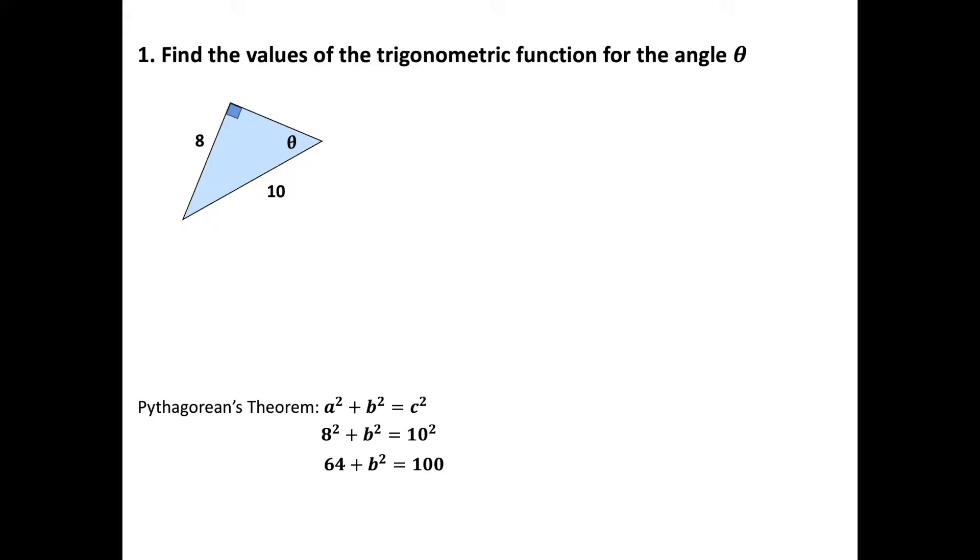I'm going to subtract 64 from both sides and that will give me b² = 36. Well if b² = 36 I'm going to take the square root of both sides. So the square root of both sides, b is equal to positive 6.